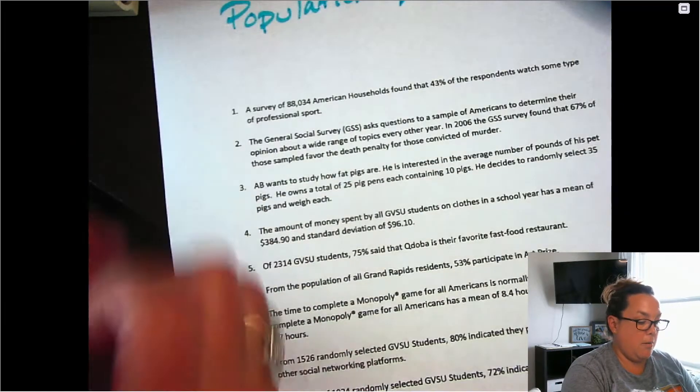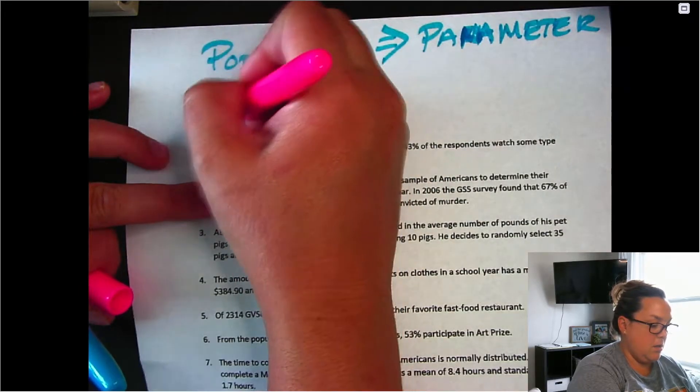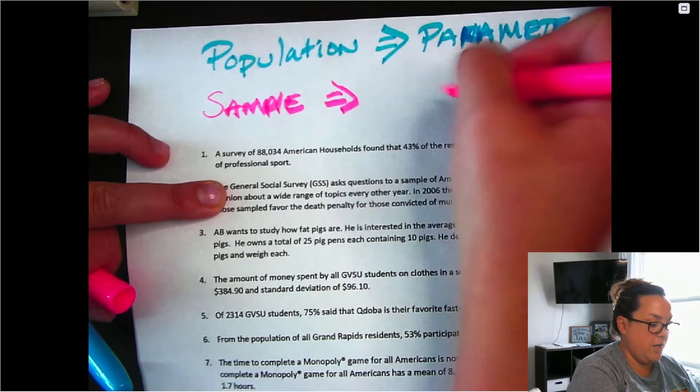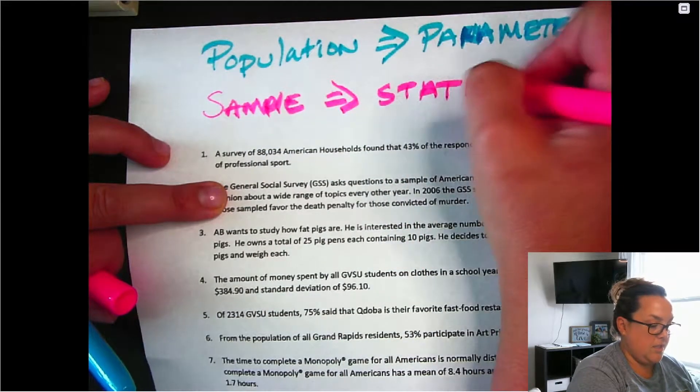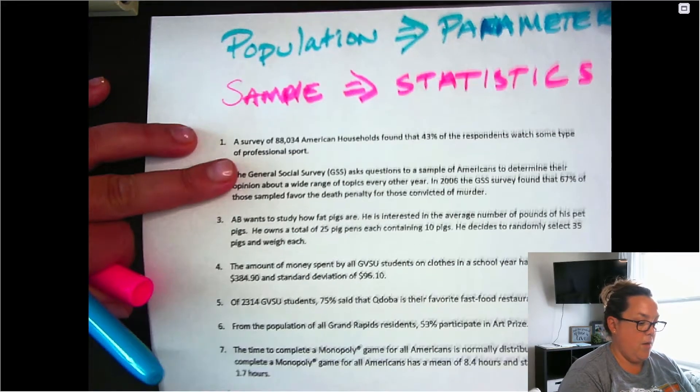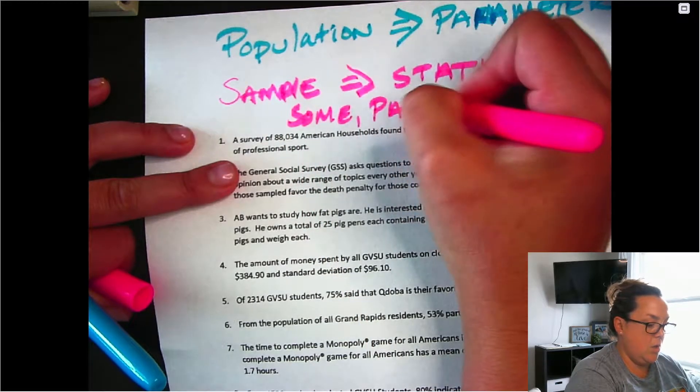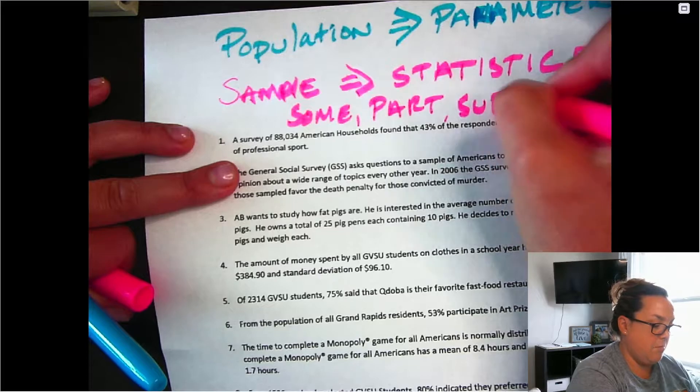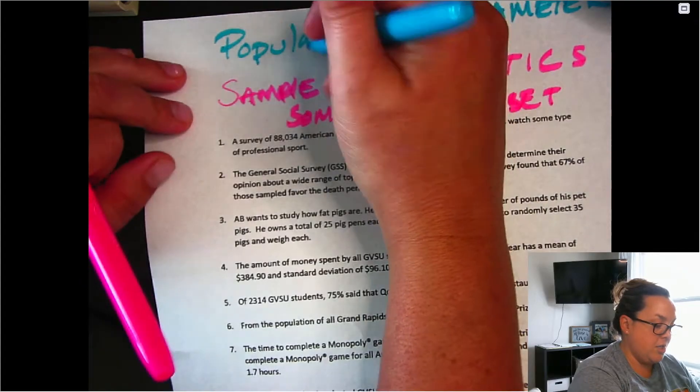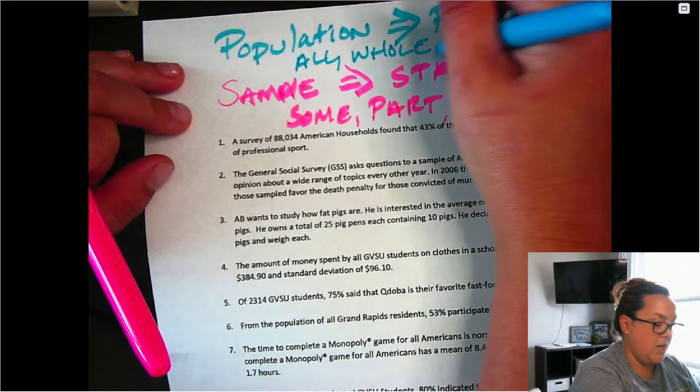And when we talk about samples, numbers referring to it are called statistics. Now, this is the sum or the part or the subset type group. So it's not the entire group. Whereas with the population, it's all whole, entire.